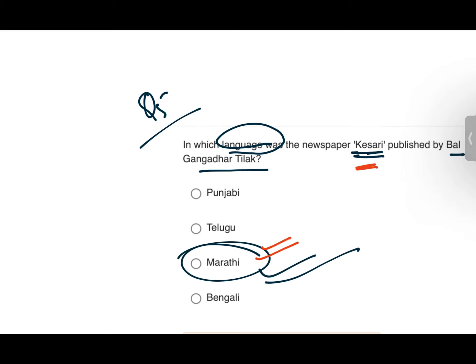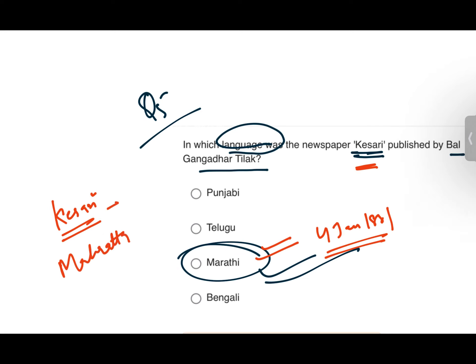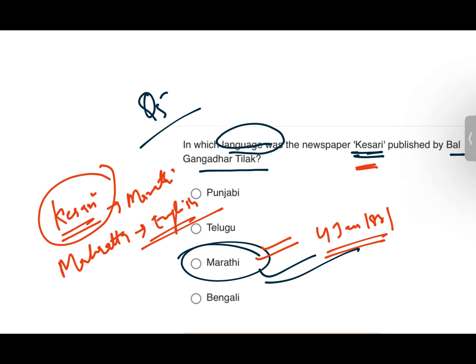Tilak's newspaper Kesari was published in Marathi. It was founded in 1881. The editors and contributors included many freedom fighters, social activists, and reformers — people like Chiplunkar and Tilak himself, all of whom contributed to the paper. That's all for today. I hope you all liked these questions.